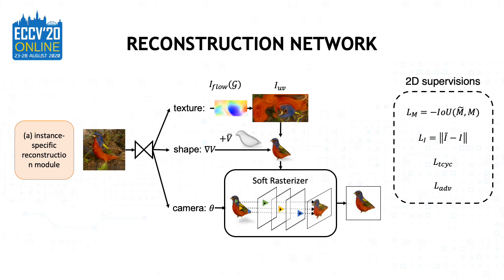To summarize the instance-specific reconstruction module: given a single-view image, this module reconstructs a textured mesh and a camera pose. This module is trained using the silhouettes and images as supervisions, along with the texture cycle consistency constraint and adversarial constraint introduced in the paper.